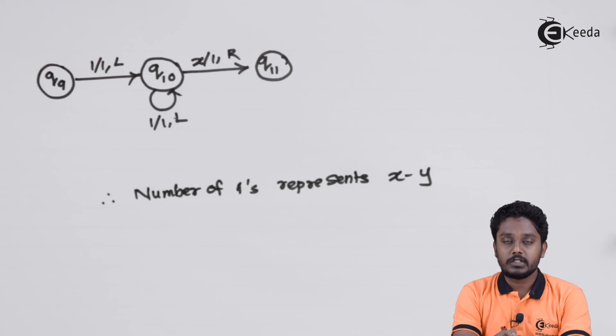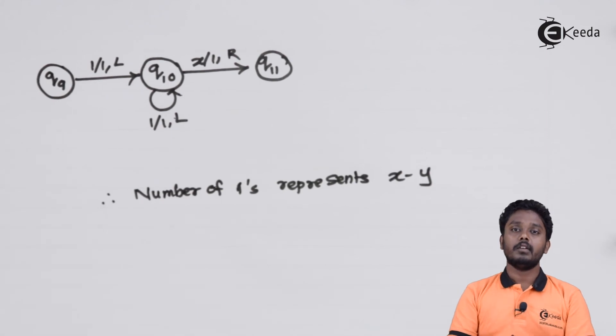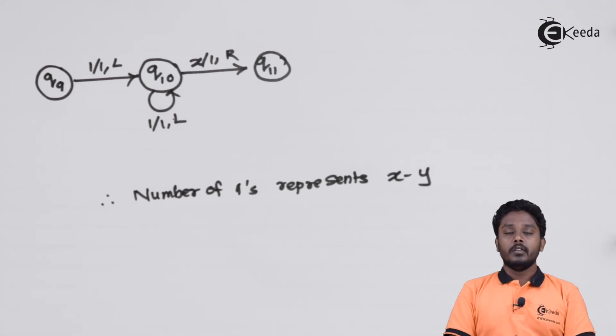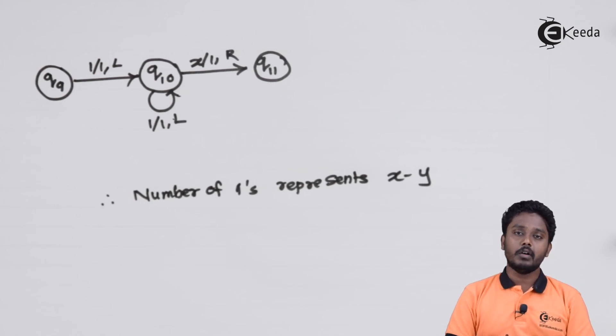One more way this could have achieved is using replacing a blank onto the left of x by using a 1. We could have done that as well. We have seen Turing machine as adder, subtractor, comparator, etc. Now, let us see an example in which Turing machine is used as a copier. That means it will copy data from one portion of the tape to the other portion.